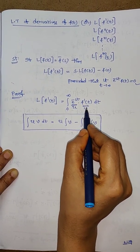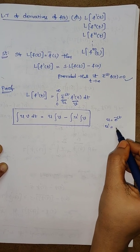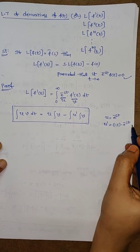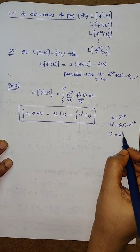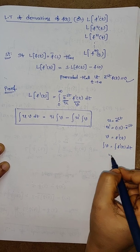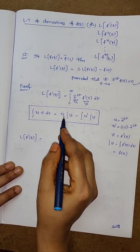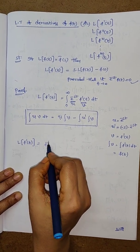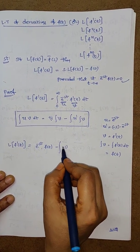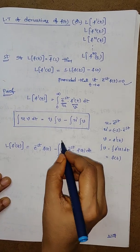Here take u as the exponential and the other as v. So u equals e power minus st, so that u dash becomes, taking the derivative with respect to t, minus s times e power minus st. Next, v is f dash of t. Integral of v means integral of f dash of t dt — the integral and derivative cancel — giving f of t. So the Laplace transform of f dash of t equals u times integral v, that is e power minus st times f of t, minus integral of u dash, which is minus s e power minus st, times f of t dt, with limits from 0 to infinity.